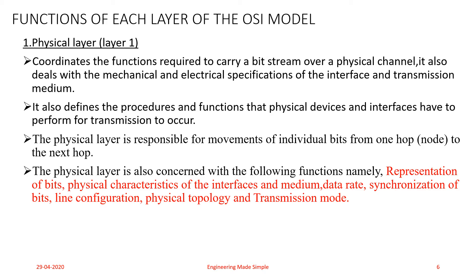The Physical layer defines the characteristics of the interface between the device and the transmission medium, and defines the type of transmission medium — for example, any type of coaxial cable, connector such as RJ45, or optical fiber cable. Whichever physical medium is chosen, the Physical layer determines its properties and transmission characteristics.